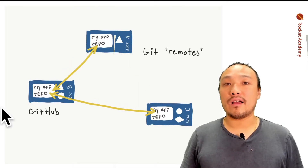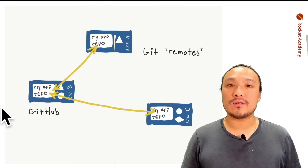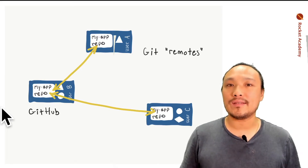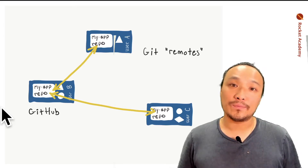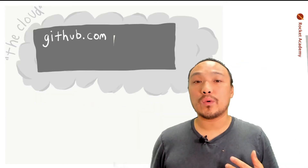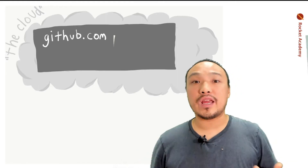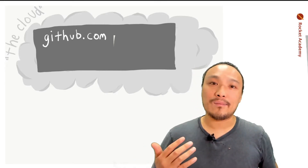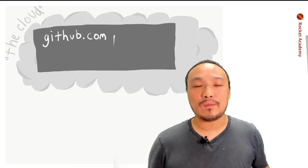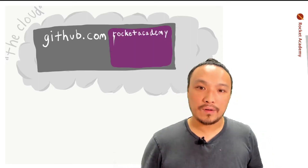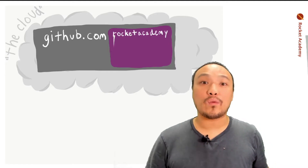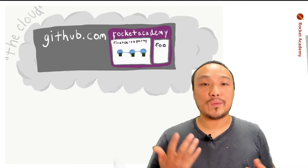For us, the arrangement of remotes and repos is going to be coordinated through GitHub, and this is going to be the centralized place where we keep all of our code. All of the work we're going to do with Git and with repos is going to originate from GitHub.com, where we store all of our repos in the cloud. Each account on GitHub — yours and the Rocket Academy account — has repos inside, and any account can have any number of repos.